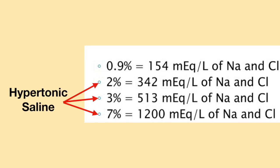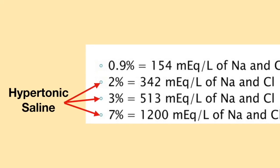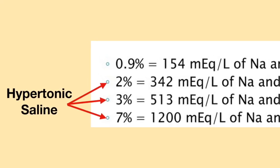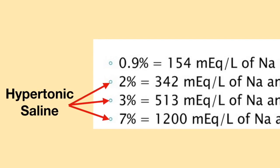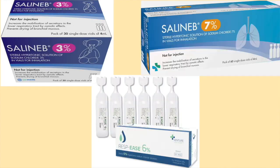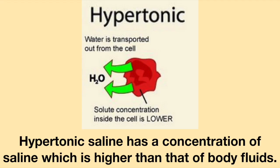Hypertonic saline is any saline which has a sodium chloride concentration above 0.9%. Hypertonic saline may be 3%, 6%, 7%, or higher sodium chloride. Hypertonic saline has a concentration of saline which is higher than that of body fluids.